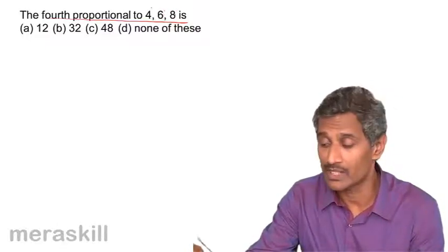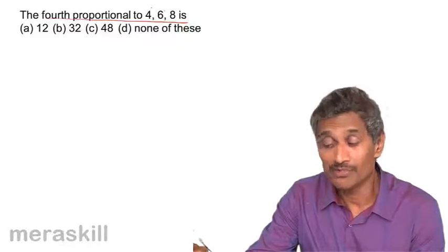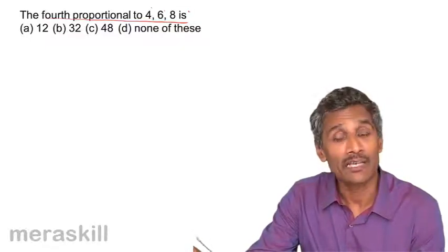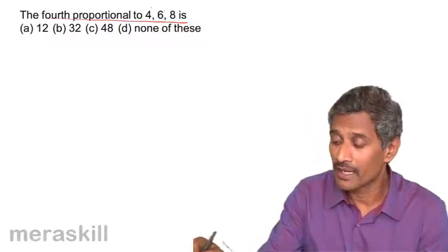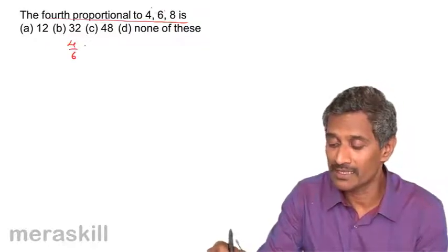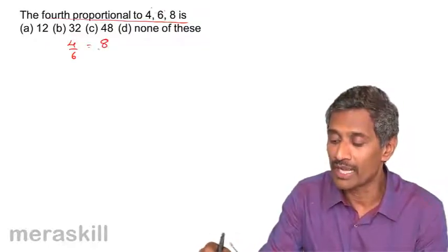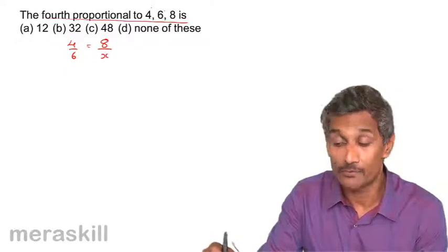So, we know the means that is the middle terms are 6 and 8. One of the extremes is known. We need to find the last extreme. So, again hence this is the first upon second, that is 4 by 6 is equal to 8 upon X. That is the fourth proportional.